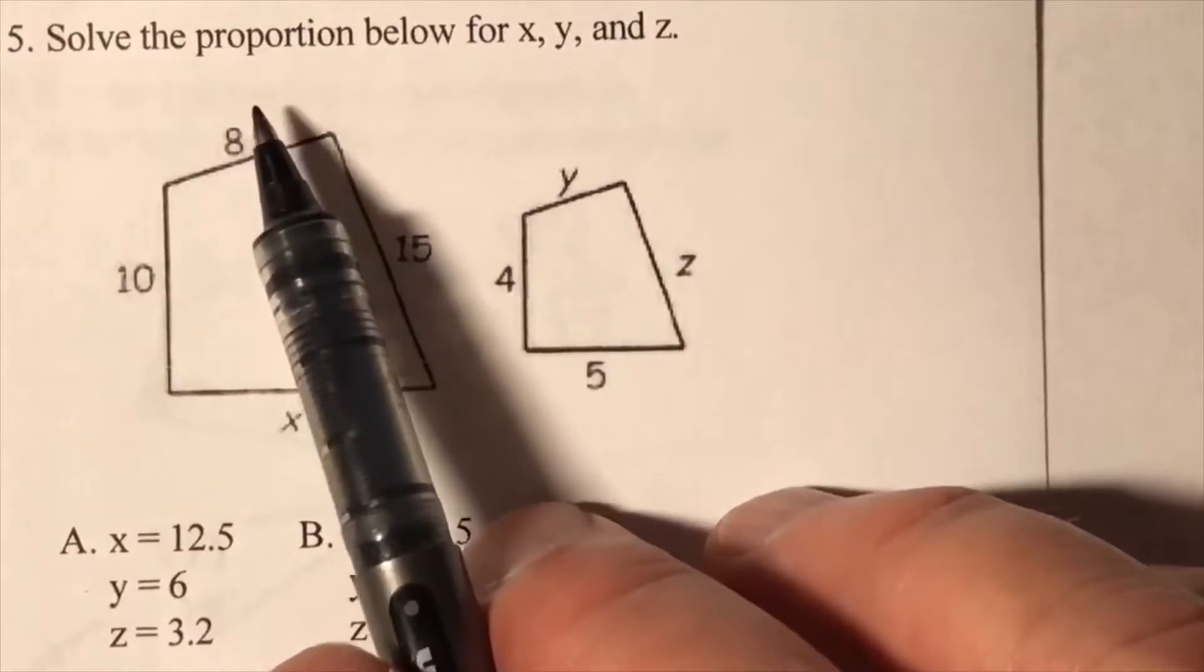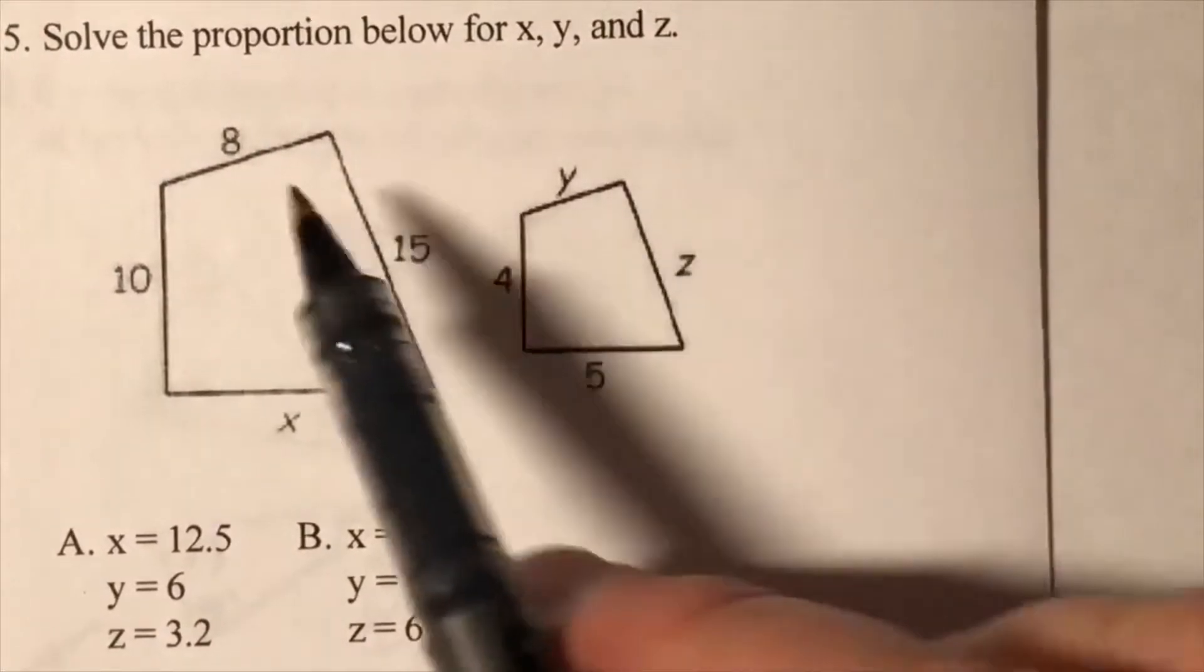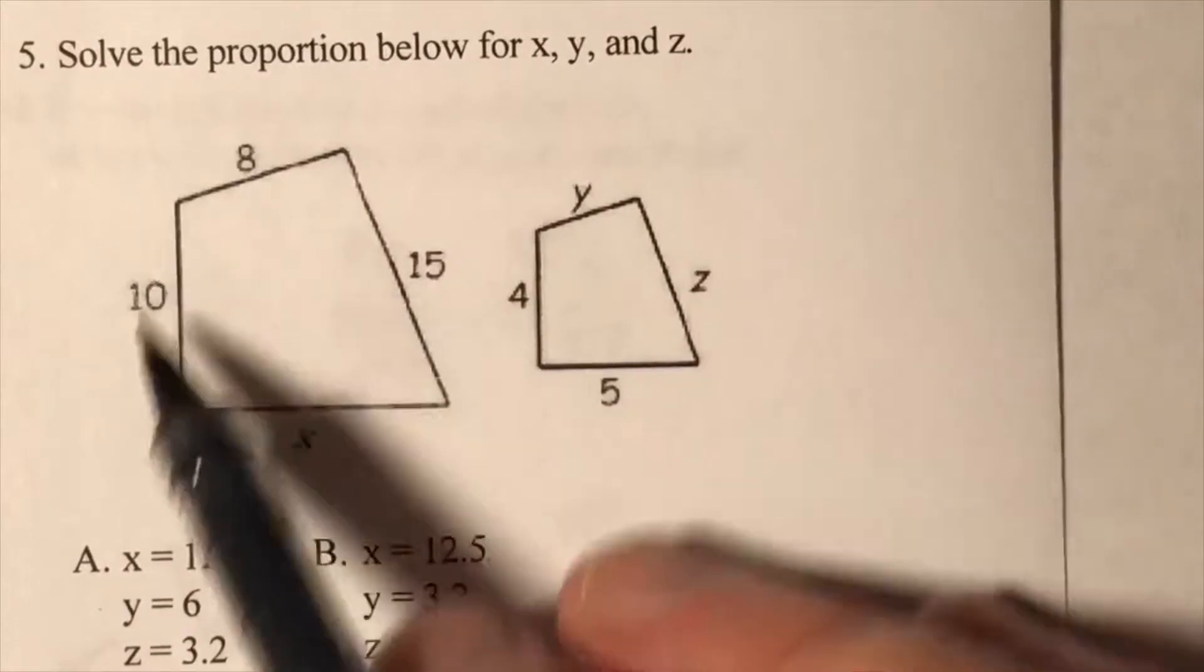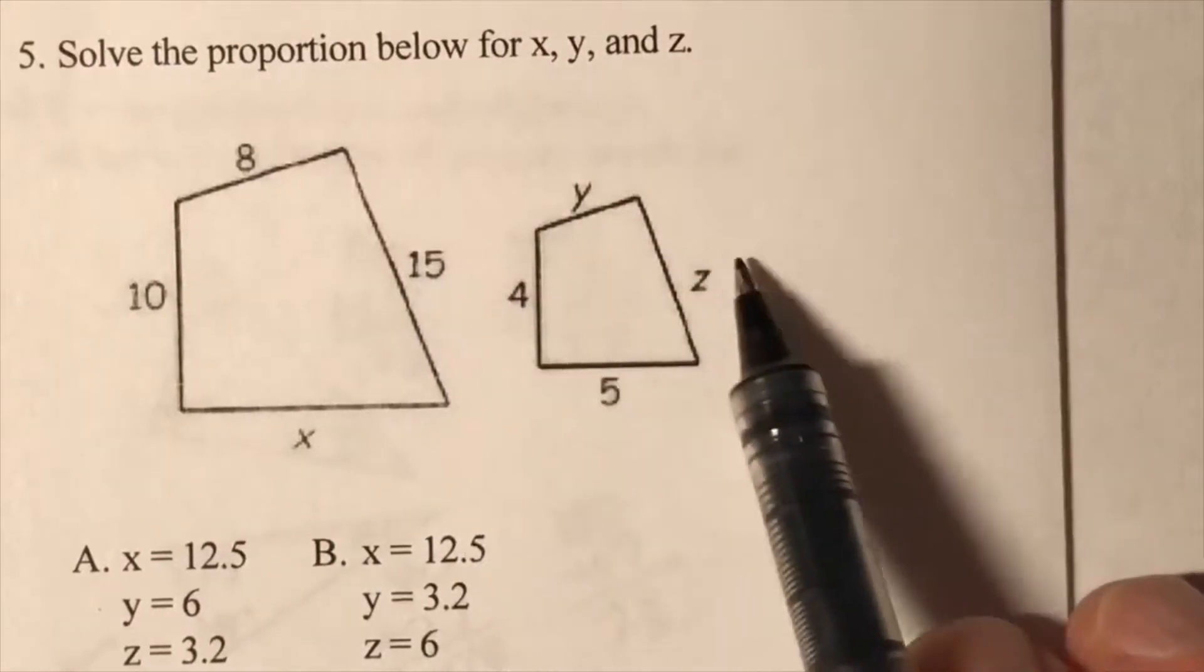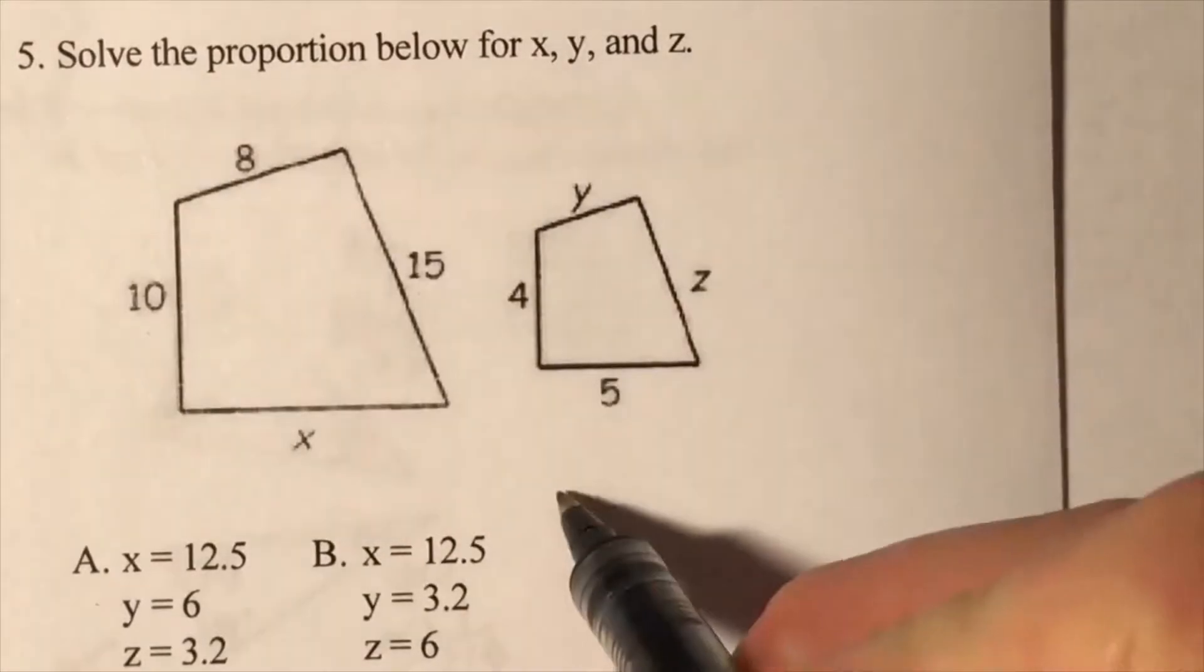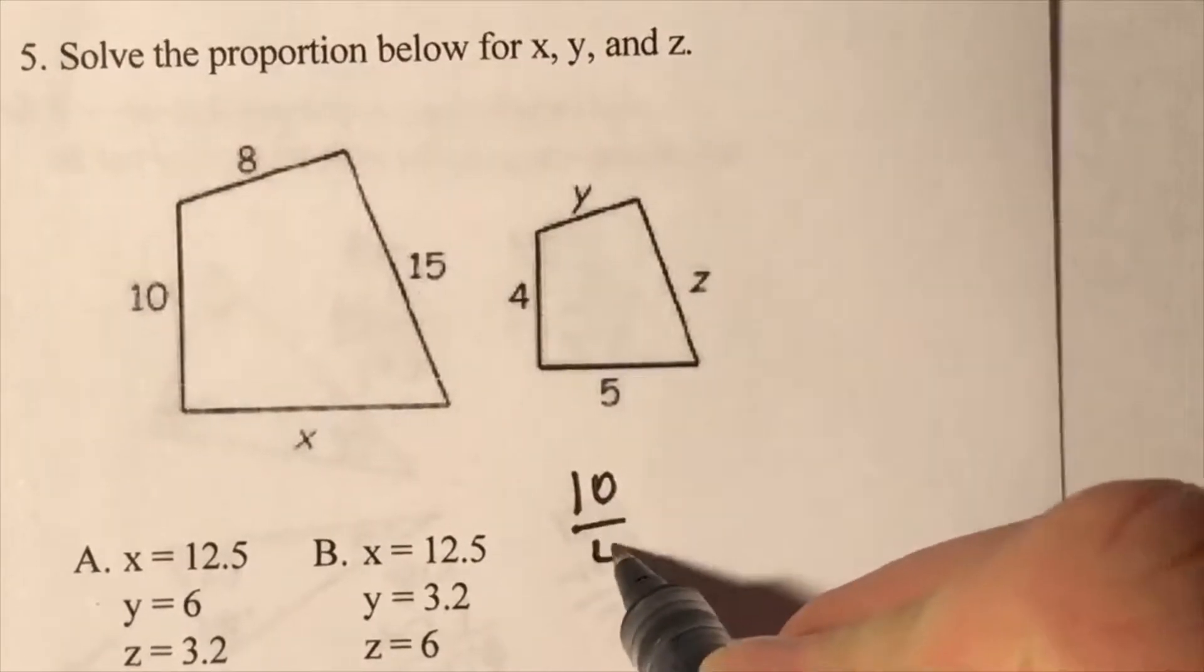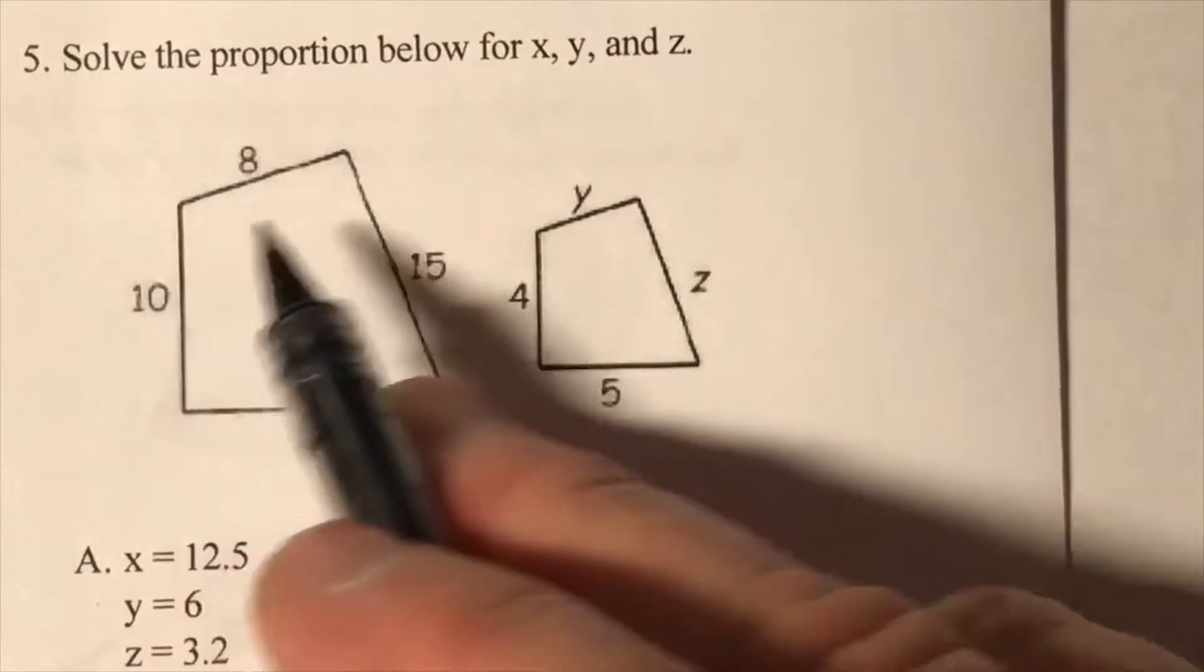Solve for these variables using proportions. 10 goes with 4, x goes with 5, 15 with z, and 8 with y. Start with 10 over 4. Notice I went with the big over the small, so I want to keep that same pattern going.